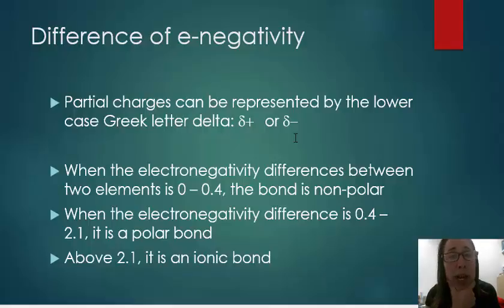Now we're going to look at difference in electronegativity to help us determine, one, if the electrons are being shared equally or unequally, and two, to determine which atom has the partial negative and partial positive if electrons are being shared unequally.